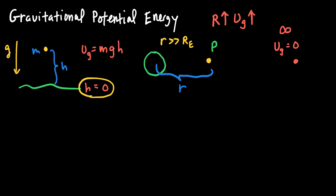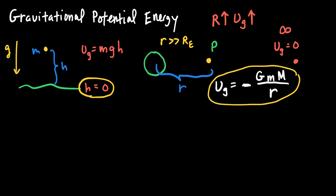The equation for gravitational potential energy at any point away from a large mass is equal to negative G — the universal gravitational constant — times the mass of the object times the mass of the planet or star, divided by the distance r between the two. So the gravitational potential energy in this case is proportional to 1 over r.